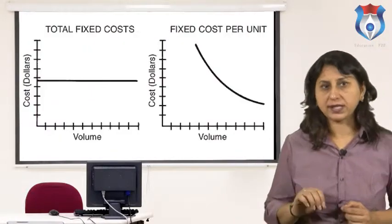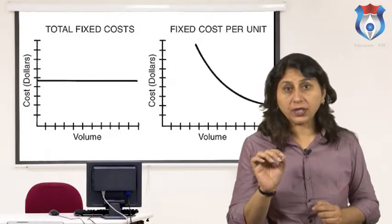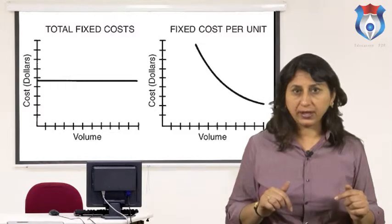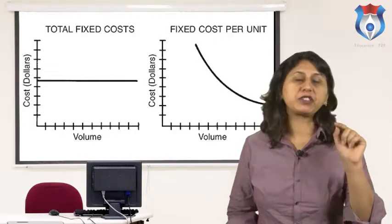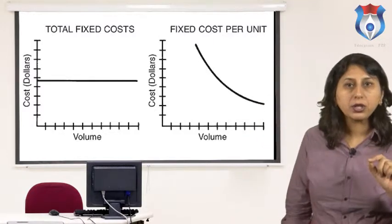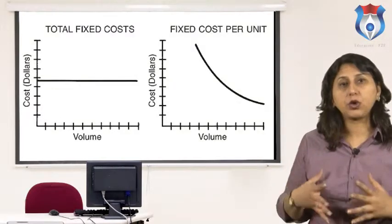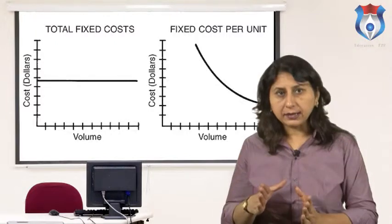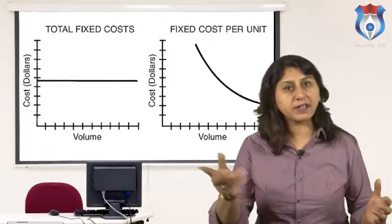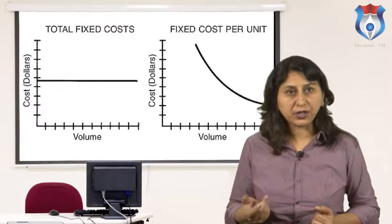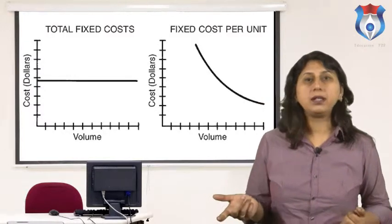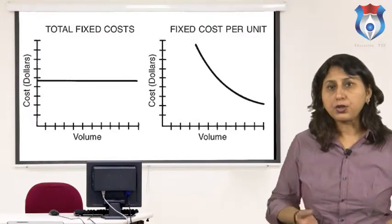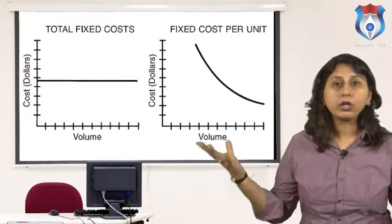Fixed costs are those business costs that are not directly related to the level of production or output. In other words, even if the business has zero output or high output, the level of fixed costs will remain broadly the same. In the long term, fixed costs can alter, perhaps as a result of investment in production capacity — for example, adding a new factory unit or through the growth in overheads required to support a larger, more complex business.